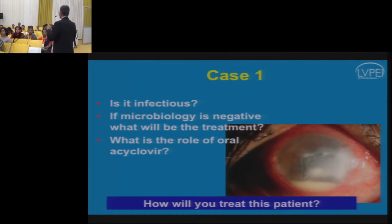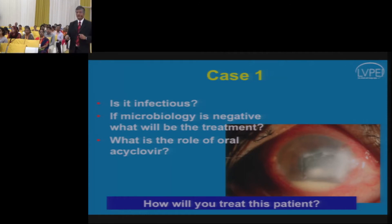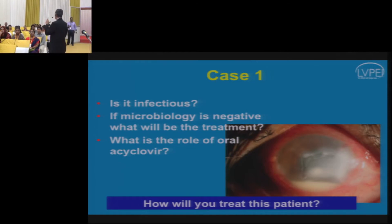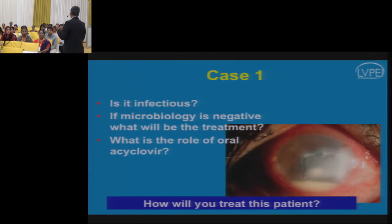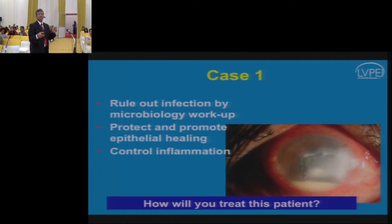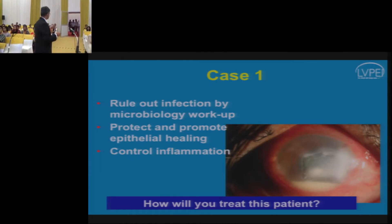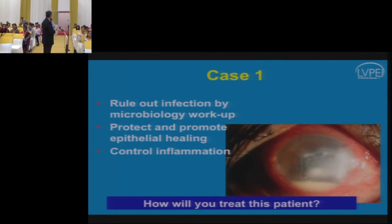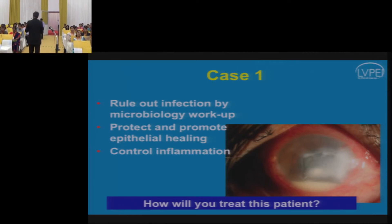Since the issue stems from epithelial breakdown, promoting epithelial healing will lead to improvement. Once the epithelial defect begins healing, corticosteroids can be added to control inflammation. To summarize: rule out infection, protect and promote epithelial healing, use lubricants and tarsorrhaphy if microbiology is negative, and add corticosteroids only when you start seeing closure of the epithelial defect.